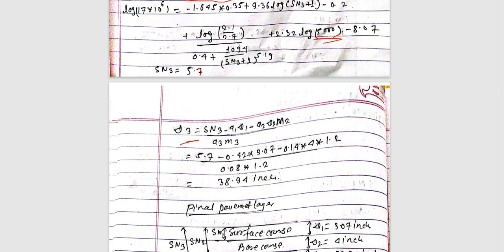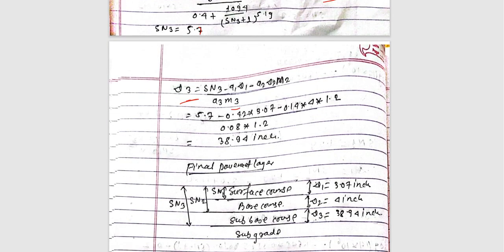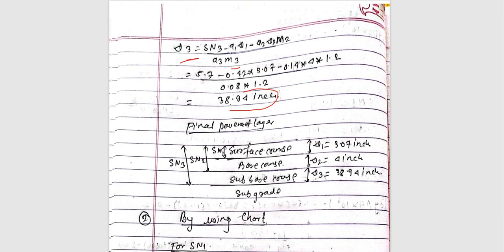Using A3 = A1·D1 − A2·D2, the subbase value comes out to 38.9 points. The final pavement layer system consists of: surface course, base course, sub-base course, and sub-grade, with thicknesses d1, d2, d3.